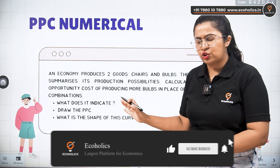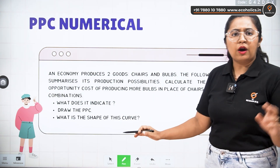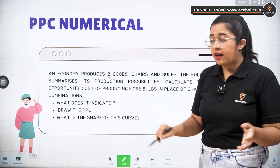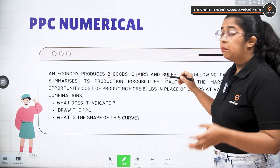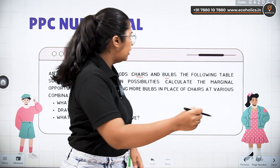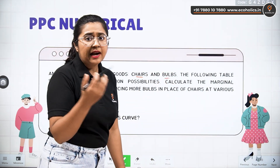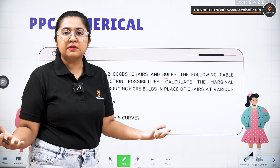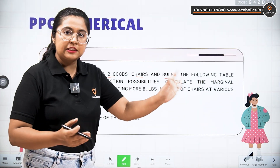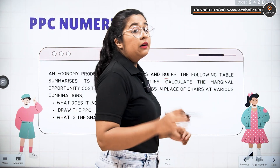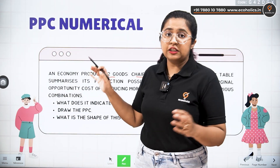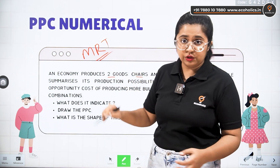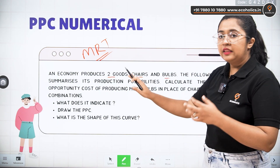First let's understand the question. The question talks about two goods that have to be produced in the economy — chairs and bulbs. There is a certain table given in this question which talks about the production possibilities of chairs and bulbs respectively. Now we need to calculate the marginal opportunity cost, also called the marginal rate of transformation, for the given data.